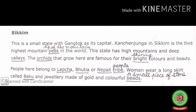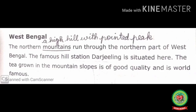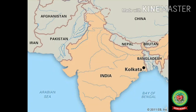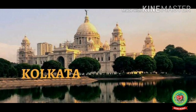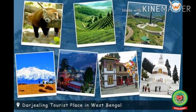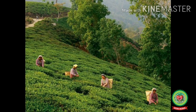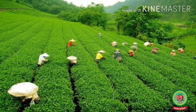Today's last topic is West Bengal. The northern mountains run through the northern part of West Bengal. The famous hill station Darjeeling is situated here. The tea grown on the mountain slopes is of good quality. Darjeeling is a famous hill station of West Bengal, and the tea grown there is famous all over the world.